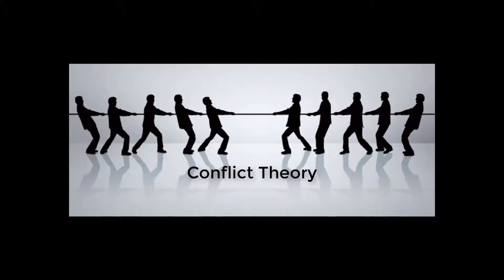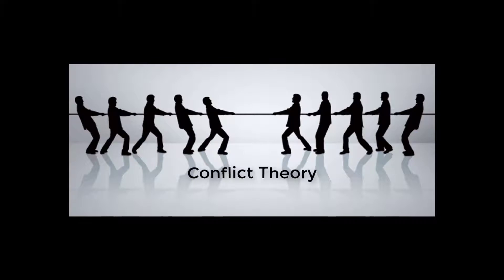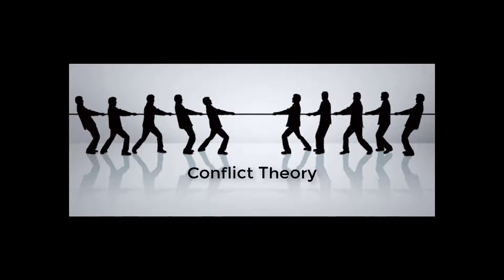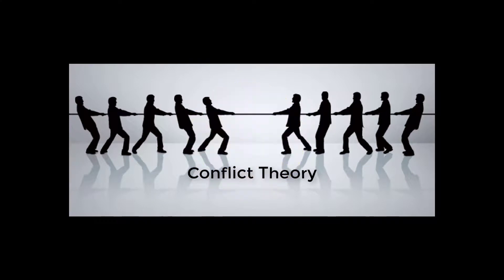Conflict theory is very different, and has its roots in the work of Karl Marx. Conflict theory, like the name suggests, says that conflict is inherent and ongoing in society because of inequality between people. To put it in simple terms, there is a small group of wealthy people and a large group of not-wealthy people — the haves and the have-nots. The haves are continually trying to hang on to what they have and get more, and the have-nots are trying to get more and take it from those who have it. There is a constant struggle for power and wealth.